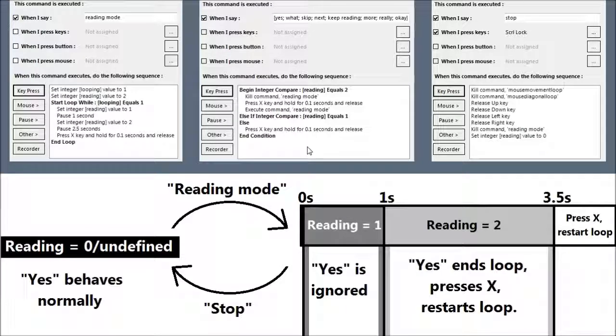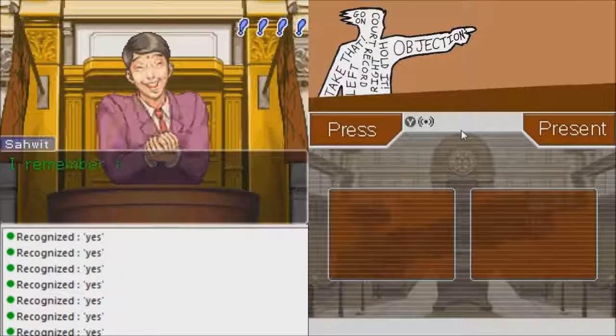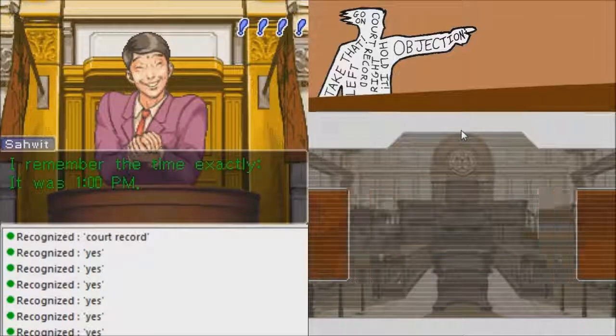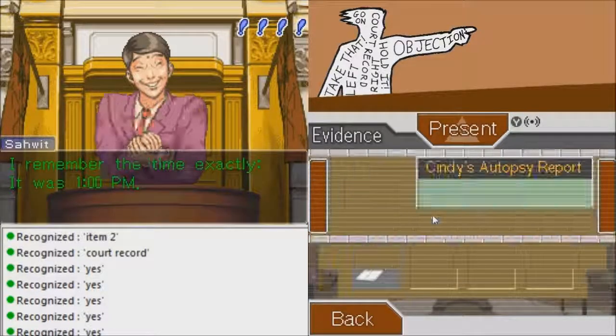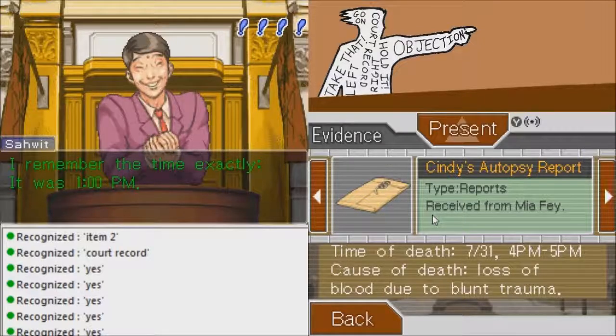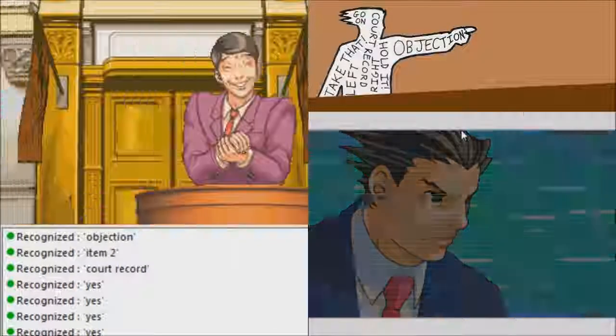Altogether, this allows easy reading of the copious dialogue, and lets you move forward at your own pace if you don't want to use the loop. Overall, it's a nice way to play the game, and I get to say hold it, take that, and other lawyer phrases. Item 2. Objection. Objection. Reading mode.